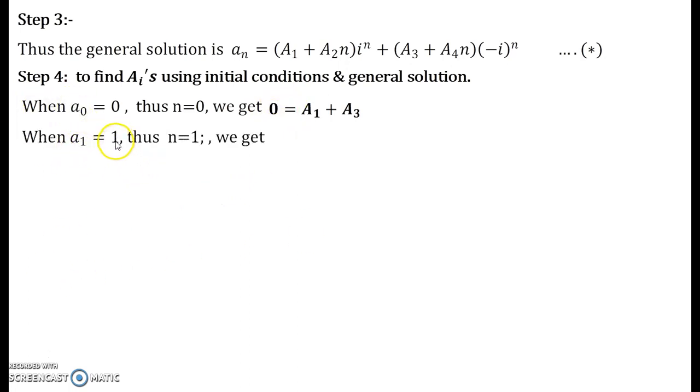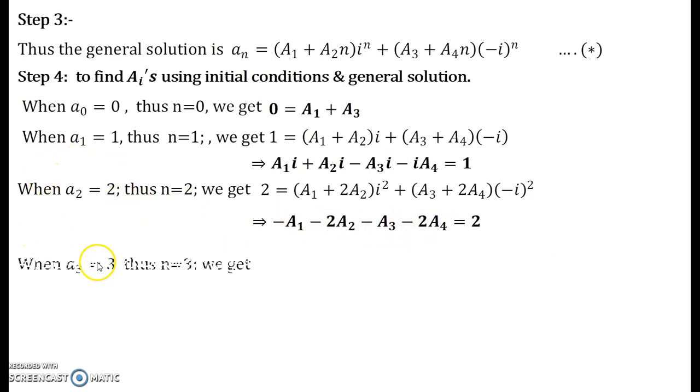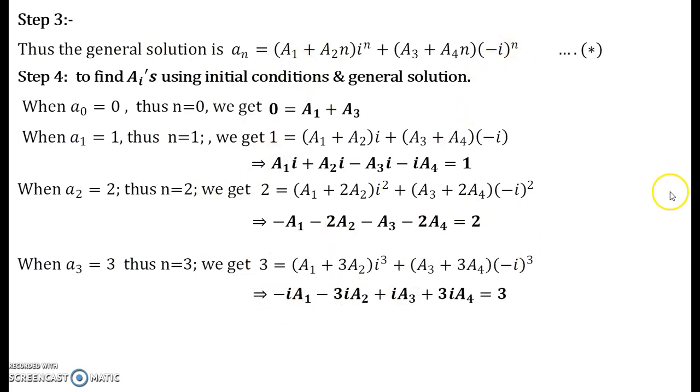Similarly, go for a_1 = 1, put n = 1 in the general solution and you obtain the following equation. Then you put a_2 = 2, and then you will get n = 2, and you plug up n = 2 and a_2 = 2 in this equation. You obtain your new equation. I am just not reading that entirely; you can write it down carefully. Now when you put a_3 = 3 and n = 3 in the general solution, you will obtain the following equation.